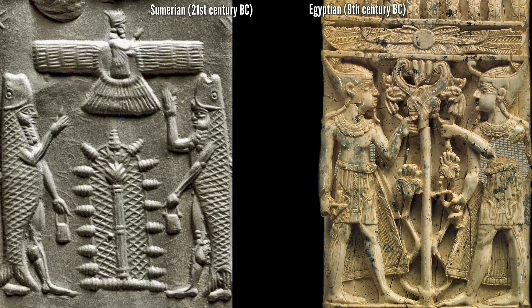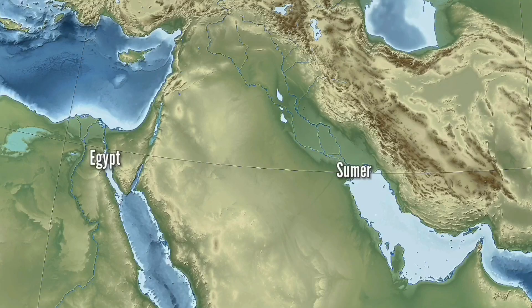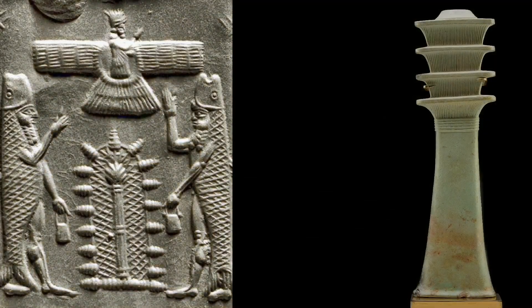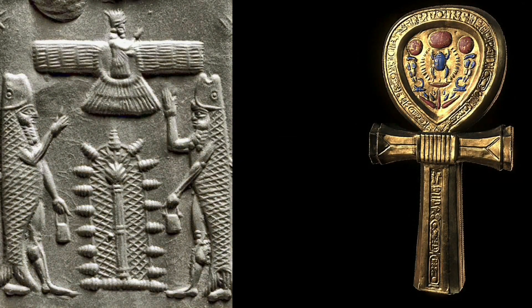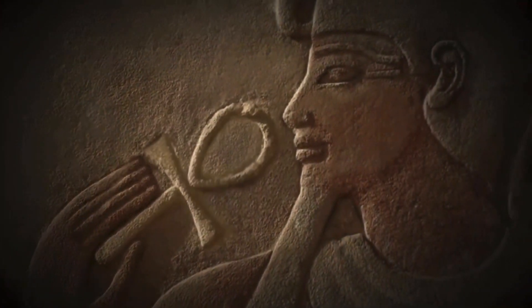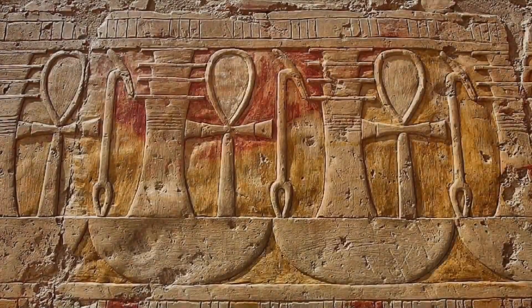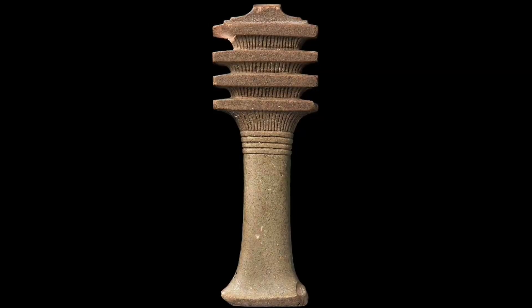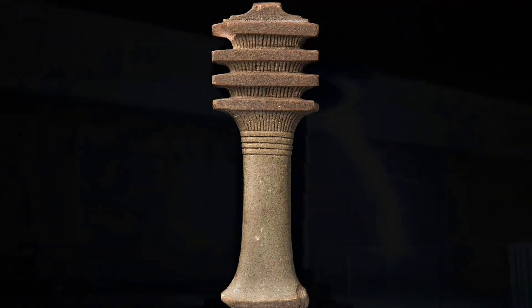Now let's look at these artifacts side by side. Basically mirrored images of one another. And since these civilizations occupy the same region and time period, it would be a logical theory to assume that they're depicting the same thing — making this the Djed, and this the Ankh, which is associated with the wife of Osiris, Isis, and symbolizes life, often referred to as the key of life. It is often depicted side by side with the Djed, which, let's just be honest here, looks nothing like a tree.